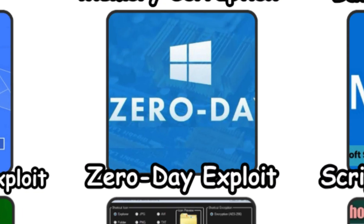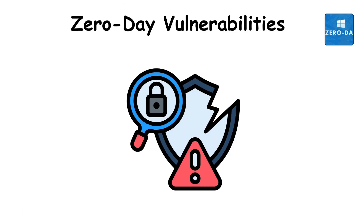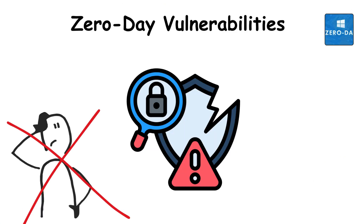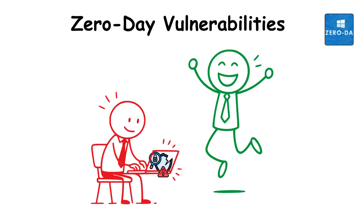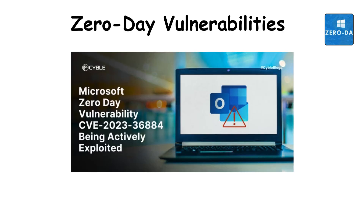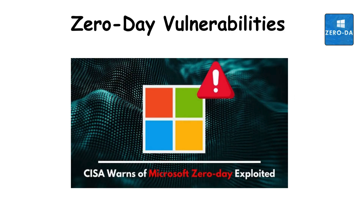Zero-day vulnerabilities. Consider a flaw no one knows exists, until someone exploits it. Zero-days are vulnerabilities discovered by attackers before Microsoft learns about them. They have appeared in the kernel, Windows Defender, Edge, and many other components. It is the most dangerous kind of weakness — invisible and unpatched.